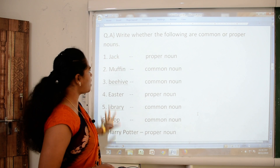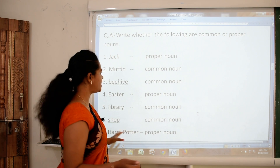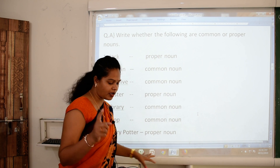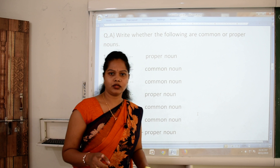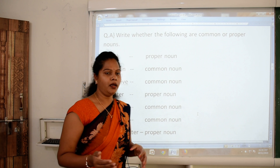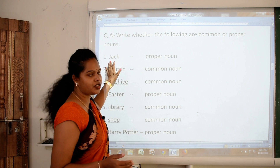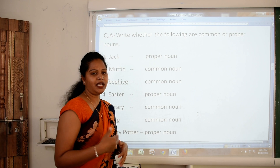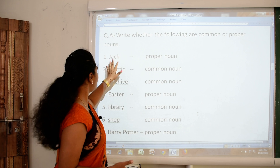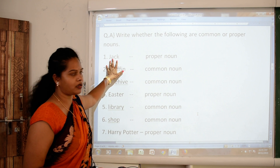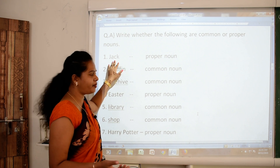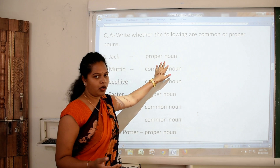Here are some noun words. What you have to do? Just identify which are the proper noun and which are the common noun. One more thing — proper nouns always start with a capital letter. It is a very easy catch for you to identify the proper noun. As you can see, the first word is Jack — capital letter, name of a particular person — so yes, it is a proper noun.